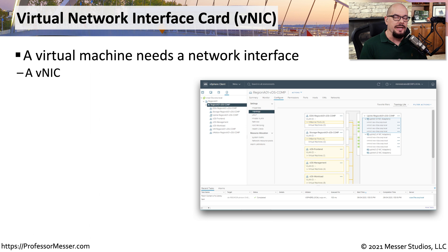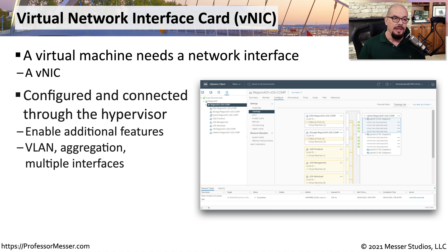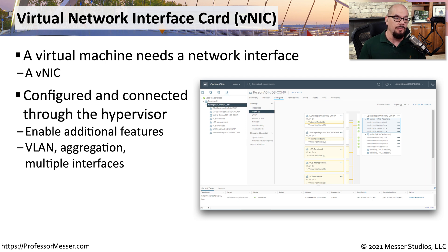Inside of your virtual machines will be a virtual network interface card, or a VNIC. All of these virtual servers need a VNIC so that they can communicate out to the rest of the network. This is usually also configured through the hypervisor, and you can add additional functionality or features depending on what you need on that server. You may need multiple network interface cards to provide load balancing, or perhaps you want to add some type of VLAN capabilities or additional monitoring. All of that can be done through the hypervisor.